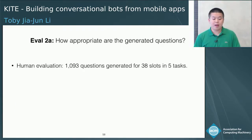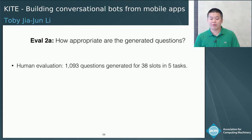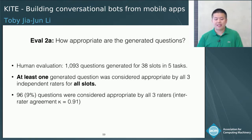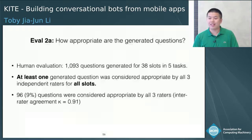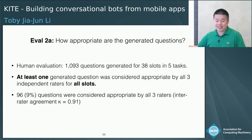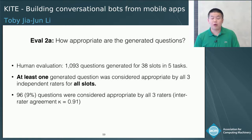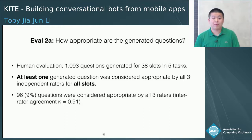We evaluated the appropriateness of generated questions using three independent readers to evaluate whether each question is appropriate. All slots in our test sets have at least one question that was considered appropriate by all readers. This is a more important metric than the overall low precisions of the questions, because in a dialogue management system each slot only needs at least one good question. So we generate more than needed and expect the bot developer to choose the best question for each slot in the web tool.